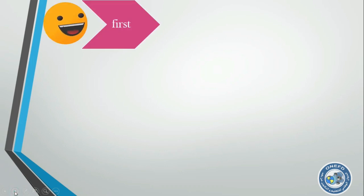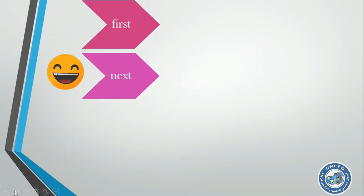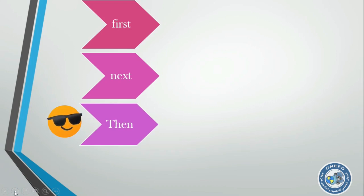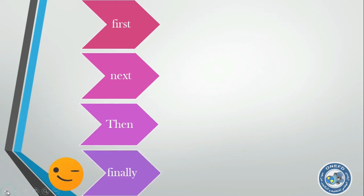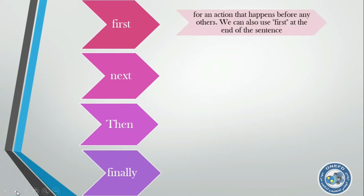We have the first linking word, which is 'first,' next, then, finally. Now one by one let's explain these linking words. We start with 'first.' We use 'first' for an action that happens before any others. We can also use 'first' at the end of the sentence. For example: 'First, let's see the museum,' or 'First, let's take the flight.'